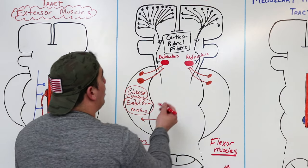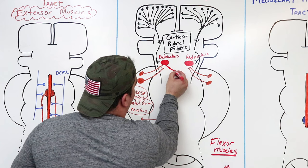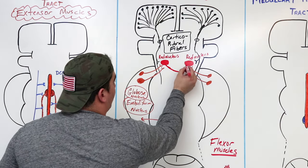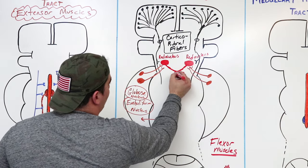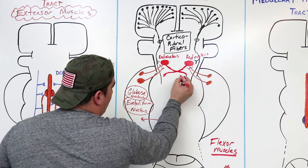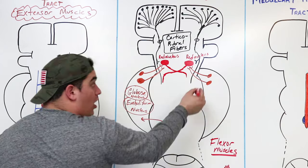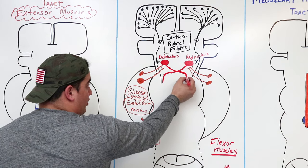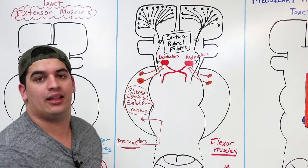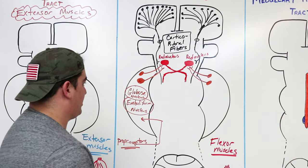Now from here, the red nucleus does something really interesting — it crosses in the midbrain. They call it the ventral tegmental decussation. It's important to know that the fibers are going to the contralateral side, and that they're crossing in the midbrain at the ventral tegmental decussation.